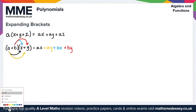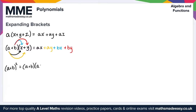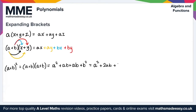What about when we have squared brackets? So let's say we've got (a plus b) squared. Remember that simply means we do (a plus b) times (a plus b). From here this is just a simple application of double brackets using FOIL. We get a squared, plus ab, plus ab again, plus b squared. Simplifying that gives us a squared plus 2ab plus b squared.